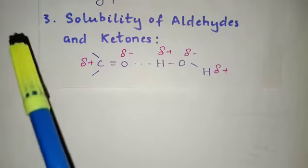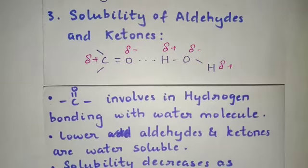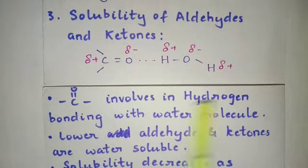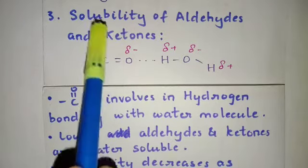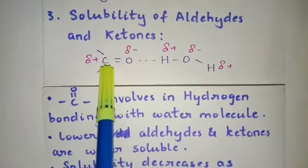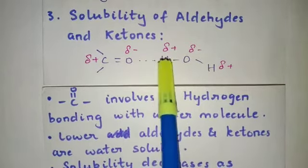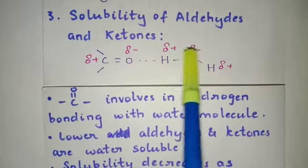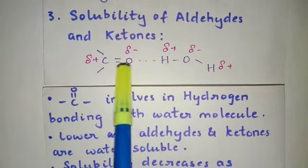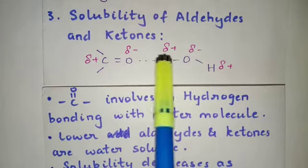The next physical property is solubility of aldehydes and ketones. The C double bond O carbonyl group involves in hydrogen bonding with the water molecule. In this diagram you can see the carbonyl group with partial positive on carbon and partial negative on oxygen, and H-O-H is the water molecule where oxygen has partial negative and hydrogen has partial positive — and a hydrogen bond is formed.